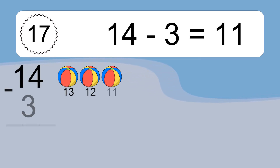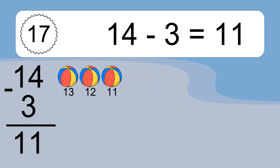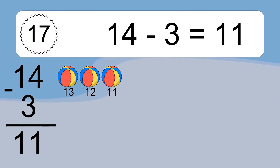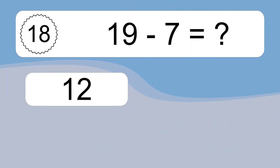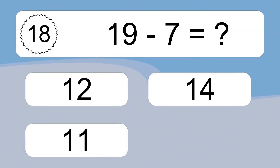14 minus 3 equals what? 14 minus 3 equals 11. Let's count it! 13, 12, 11. 19 minus 7 equals what?